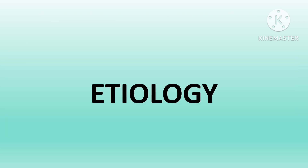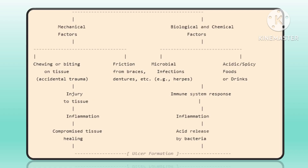Regarding the etiology of oral ulcers, the cause is multifactorial. Common causes include mechanical factors such as physical trauma — accidentally biting the cheek, constant friction from braces or dentures — leading to tissue damage, inflammation, and slow healing. Biological and chemical factors such as infections and acidic or spicy foods can also trigger an immune response and acid release, damaging the mucosal lining and leading to ulcer formation.